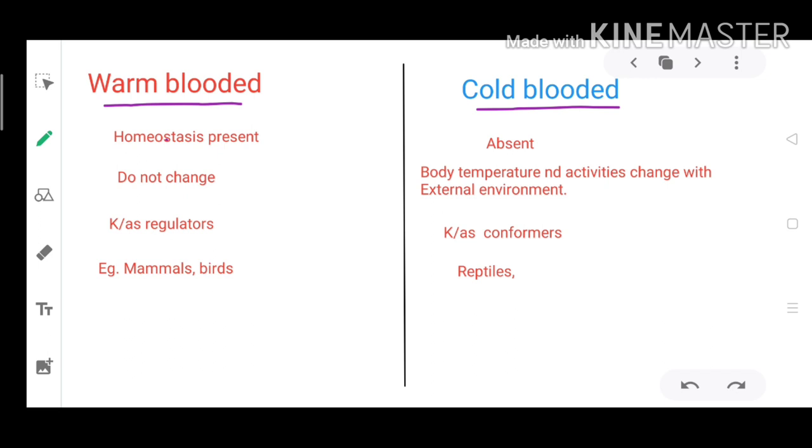In cold blooded animals, body temperature and body activities change with external environment, but they do not change in case of warm blooded animals. Cold blooded animals are also called conformers, and warm blooded animals are known as regulators. Examples of cold blooded animals are reptiles, and warm blooded animals are mammals, including human beings.